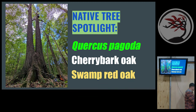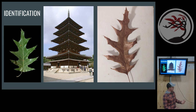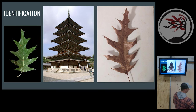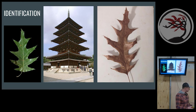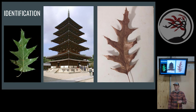So let's get into it. Pagoda is the specific epithet, and a pagoda is a specific type of structure — the leaf bears an interesting resemblance to it. It's a very, very distinctive leaf. Just out of curiosity, who is aware of cherry bark oak?